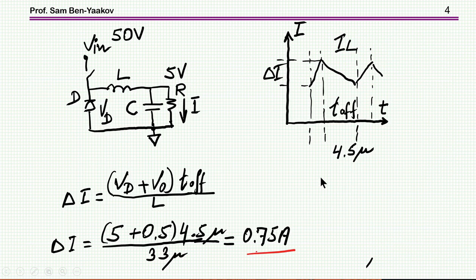Looking at the design, I have the inductor so I can calculate the ripple current of the inductor, which is this delta I. This is the voltage during the off time, diode voltage plus the output voltage times the T off time which is 4.5 microseconds. I come up with 0.75 which is fine.